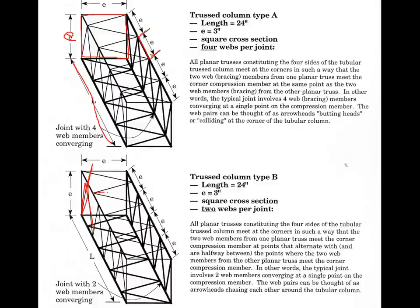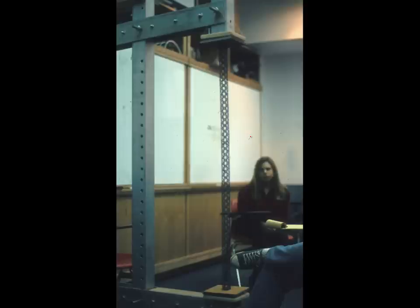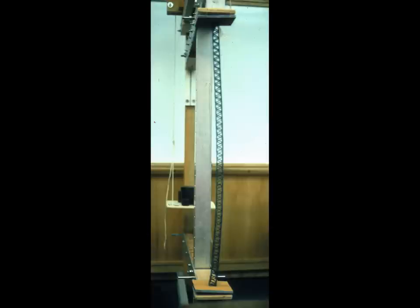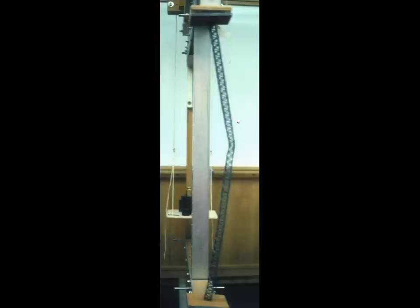It turns out these two columns perform the same. What we want to demonstrate is that if we do a fairly slender column, we observe general overall buckling that begins to assume this sine shape. In this case it's not a very good sine curve because some of the joints weren't made very well, but that's the gist — it has begun what we call overall buckling.